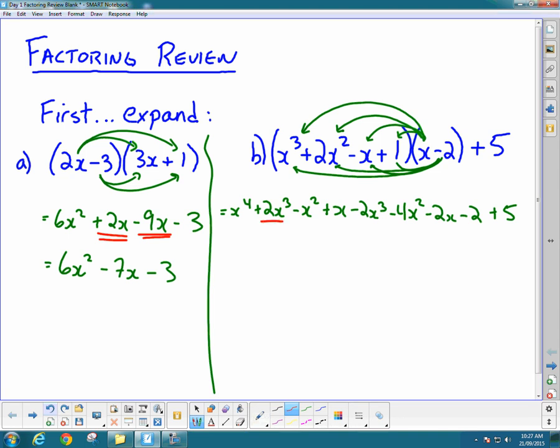Now we have lots of like terms. The 2x³ and -2x³ cancel to zero. We have -x² and -4x², which is -5x². We have x and -2x, which is -x. Finally, the +3 at the end. So simplified: x⁴ - 5x² - x + 3.